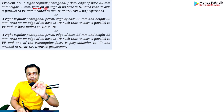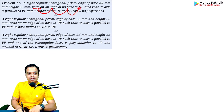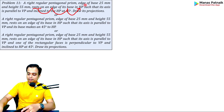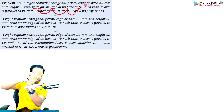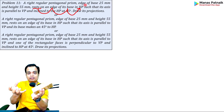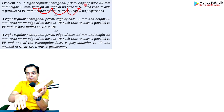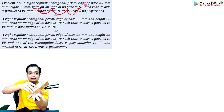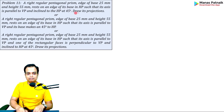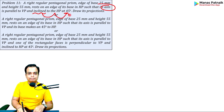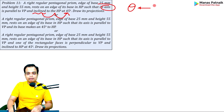The pentagonal prism is resting on an edge of its base in the HP. That means this base edge is in contact with the HP, whereas the remaining base edges are lifted up in the air, because the axis is going to make some angle. Reading the question further, we find that the axis is inclined to the HP at an angle of 45 degrees. Any inclination with respect to HP is represented by theta; any inclination with VP is represented by phi.